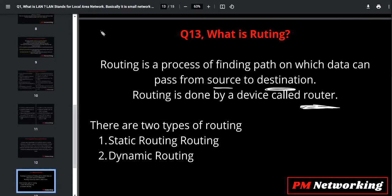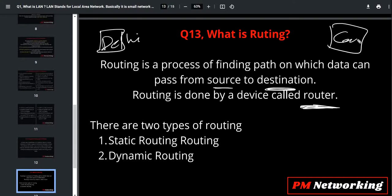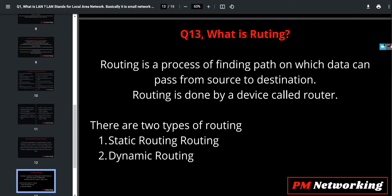Suppose I have one network in Delhi and one network in Canada. I need a path to reach the Canada network from the Delhi network. The process of finding that path is known as routing. There are two types of routing: first is static routing and second is dynamic routing.